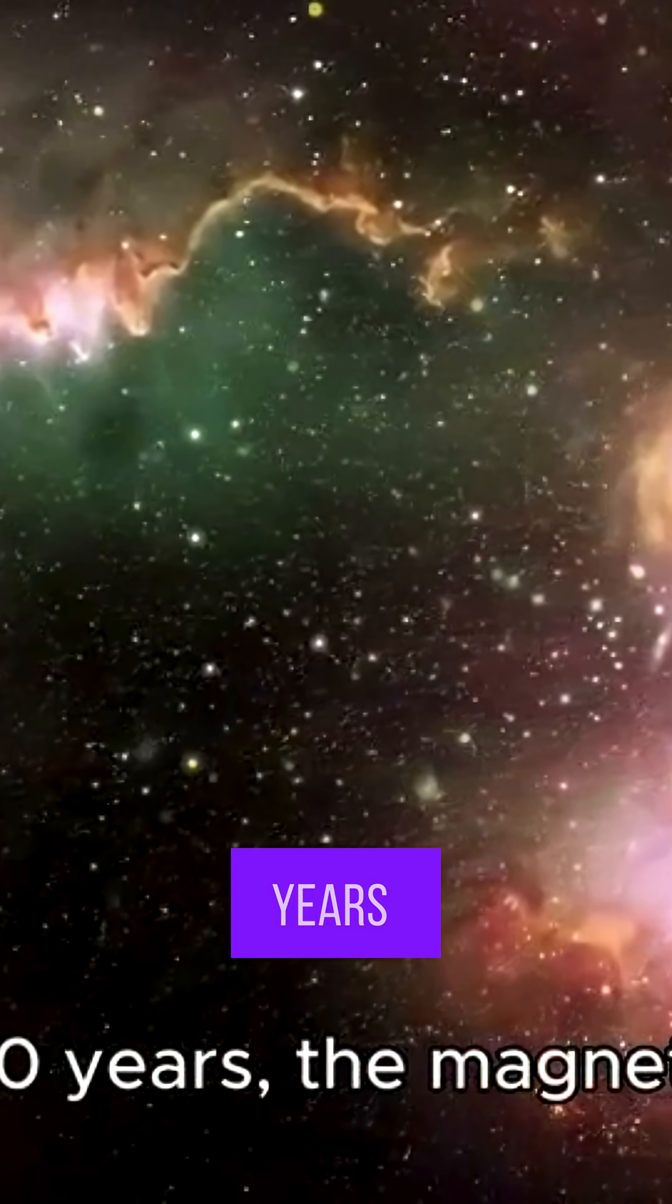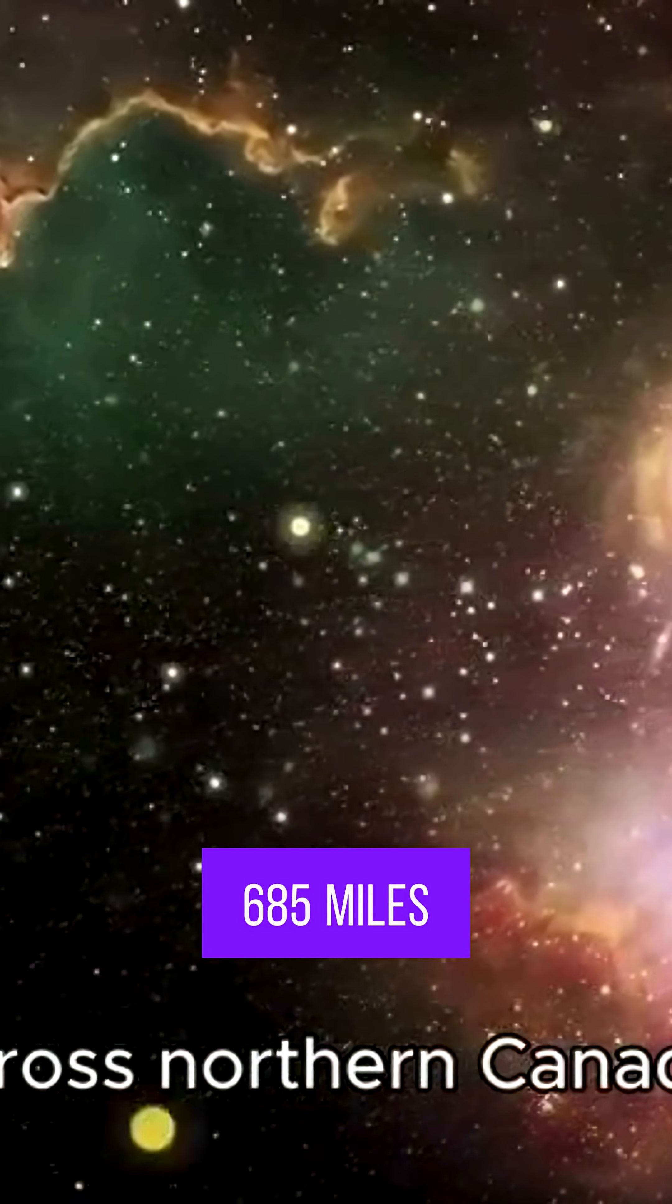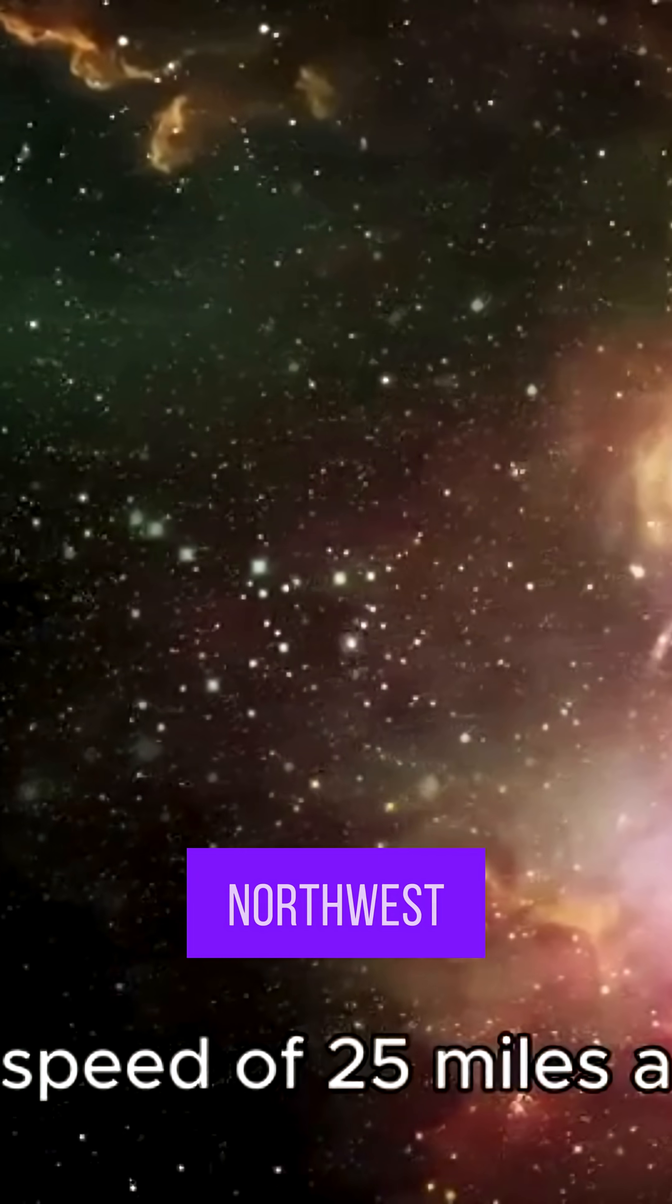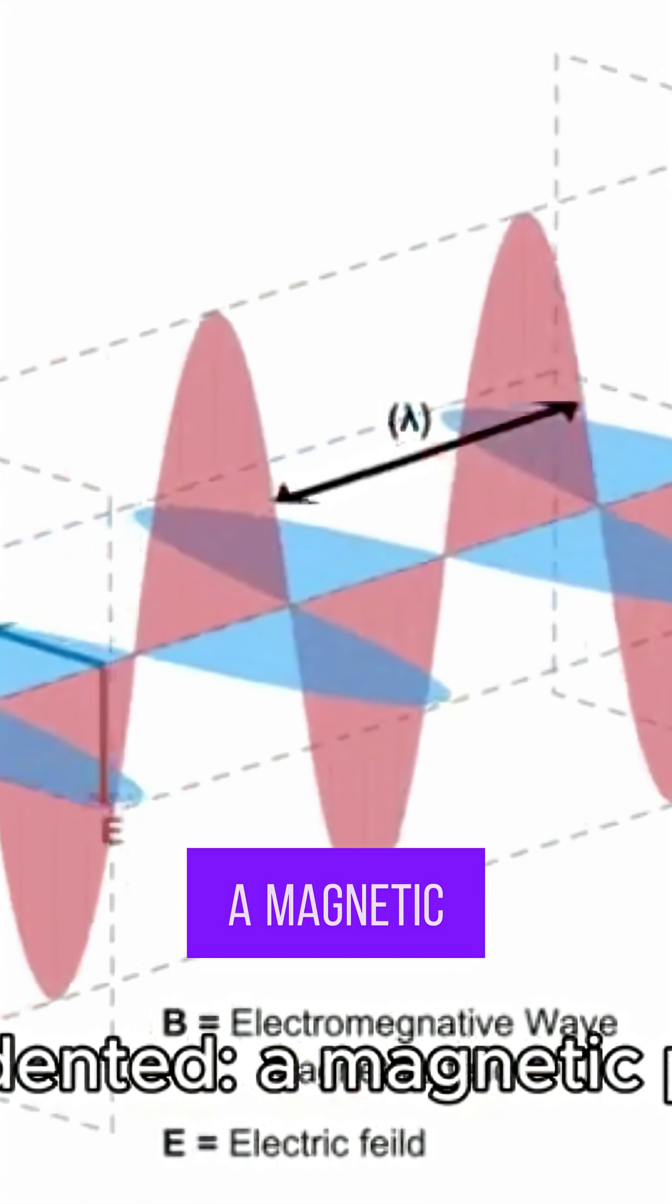150 years, the magnetic north pole has wandered a staggering 685 miles across northern Canada, and right now it's racing northwest at a speed of 25 miles a year. This rapid movement could signal something unprecedented: a magnetic polar flip.